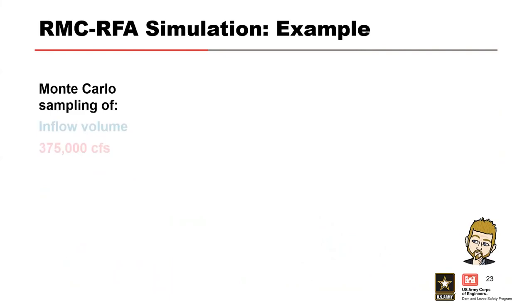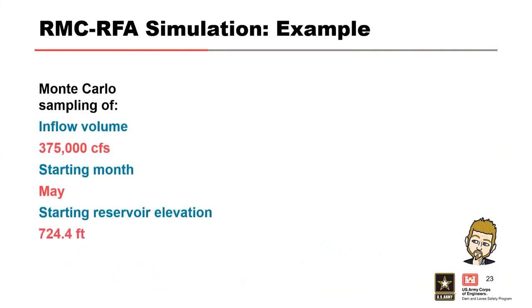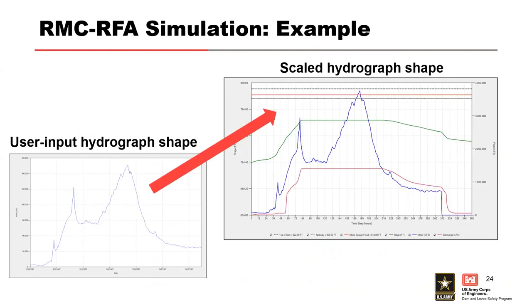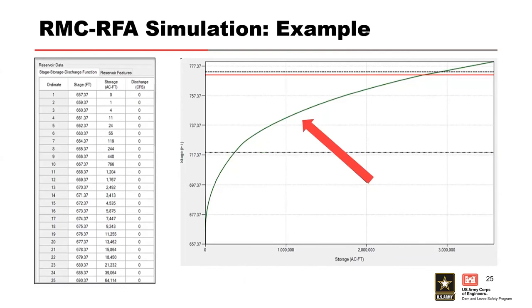After the inflow volume, starting month, starting reservoir stage, and inflow hydrograph shape are randomly sampled, the inflow hydrograph is scaled based on the sampled volume. The scaled hydrograph is then routed through the reservoir model using simple modified Puls routing, also known as level pool routing. The sampled starting stage is used, and for each time step the inflow volume is compared to the user input stage-storage-discharge rating curve to determine the reservoir stage and discharge.